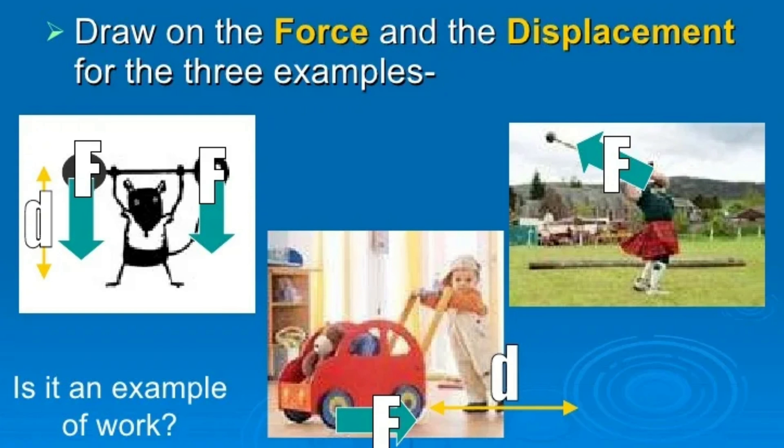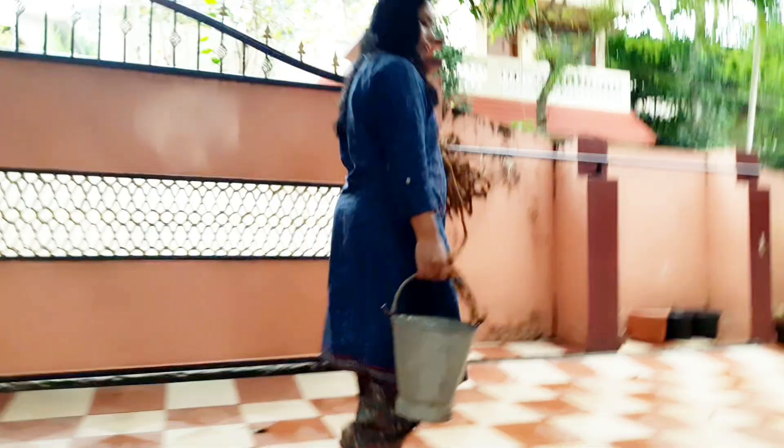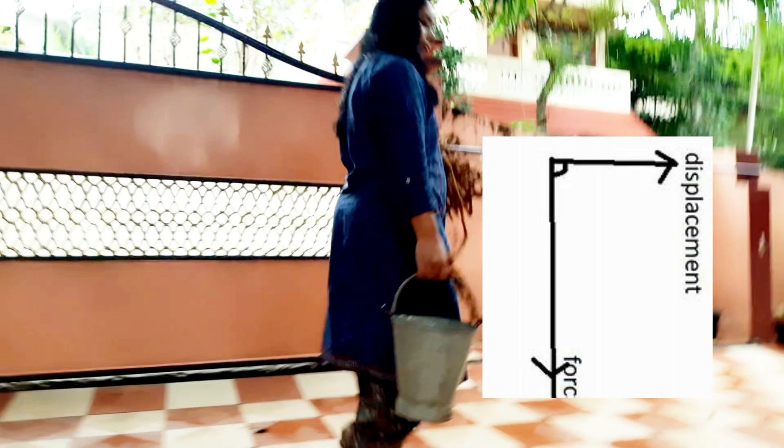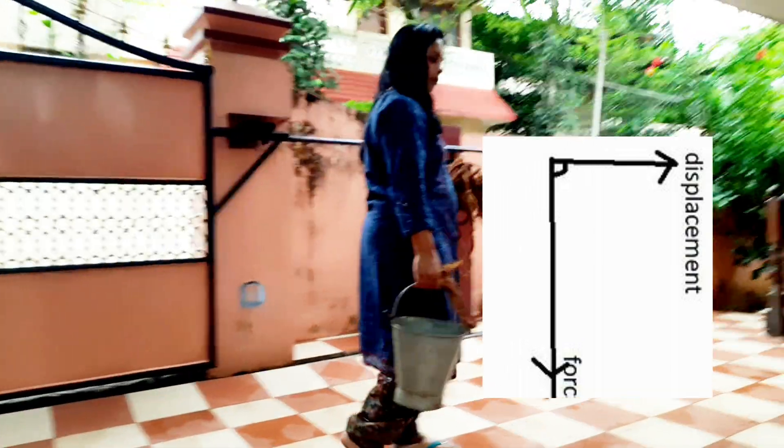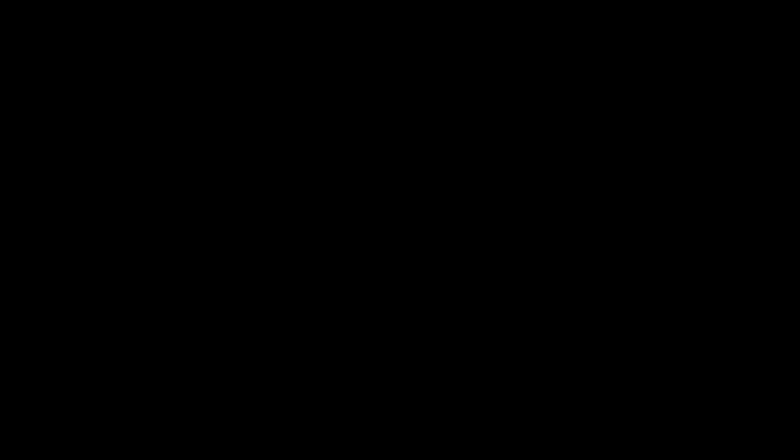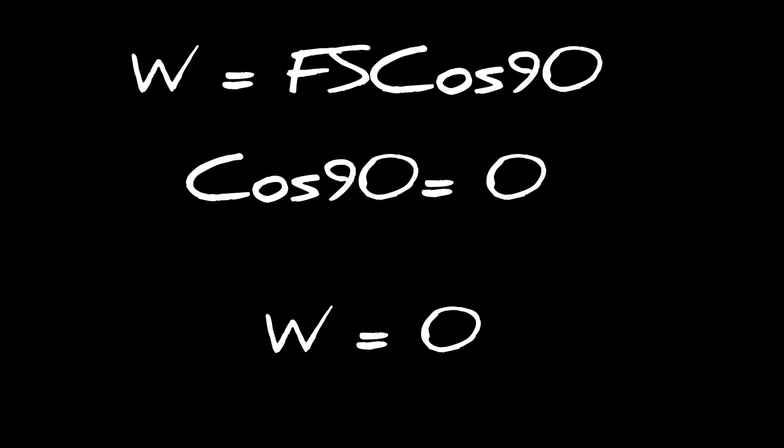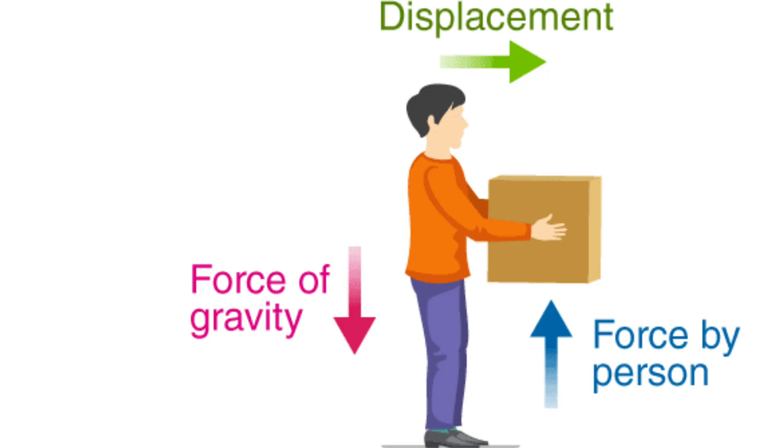But in the case of simply walking on a horizontal surface while holding a bucket of water in hand, there is no work done by gravity, because there is 90 degrees between the force applied and the displacement. As per the formula W = F·s·cos90°, and the value of cos90° is zero, so there will be no work done against gravity.